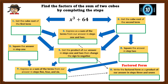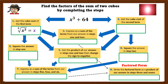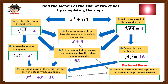Now let's test your understanding. Find the factors of the sum of two cubes by completing the steps. The given is x³ + 64. You have 10 seconds — ready, go! Time's up. Step 1: x. Step 2: 4. Step 3: x + 4. Step 4: −4x. Step 5: x². Step 6: 16. Step 7: x² − 4x + 16. Factored form: (x + 4)(x² − 4x + 16).